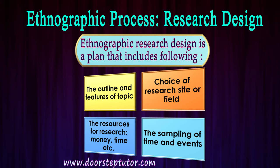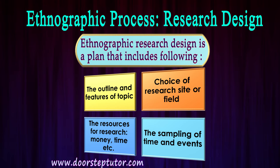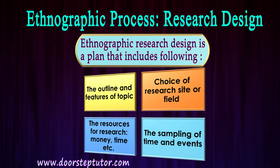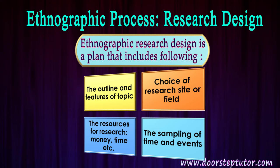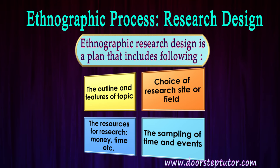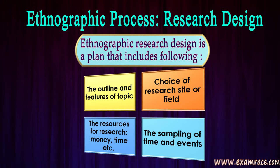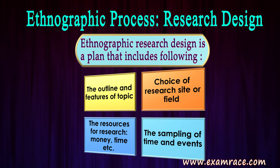The second step is the choice of research site or field. After outlining the topic, a researcher needs to select a research site on which he is going to conduct studies. Before going to the field, the resources needed are money and time, because researchers have to spend time living in that society and need both money and time to survive there and obtain valuable data for the research.